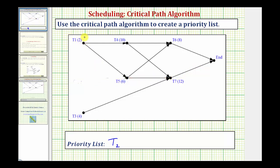We had several paths from task one that took a long time. Going from task one to task six, to task seven to the end, is two plus six plus 12, or 20 hours. But if we take the path from task one to task four, to task seven to the end, that takes two plus ten plus 12, or 24 hours. From task three, we only have one path — task three to task seven to the end — which is only 16 hours. So this path is our next critical path, and therefore task one is next in our priority list.